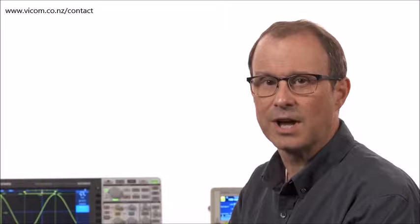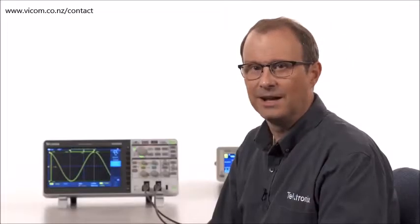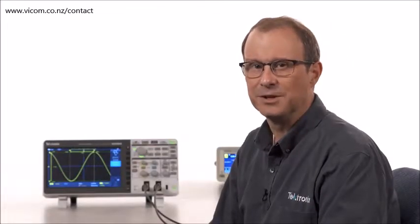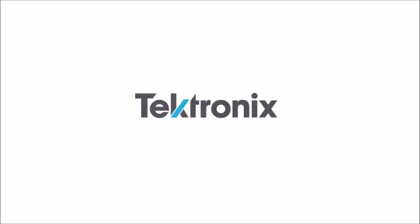In this video, I showed you how to get a quick estimate of amplitude and time measurements of signals using a Scope's Graticule. Now you can see how many of your friends even know what a Graticule is. I showed you how to take the same measurements using cursors. In the next tutorial in this XYZ series, we'll show you how to use automated measurements to get more accurate time and amplitude measurements with even less work. Find out more at VICOM's website.